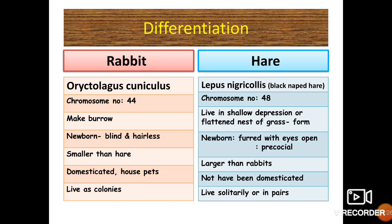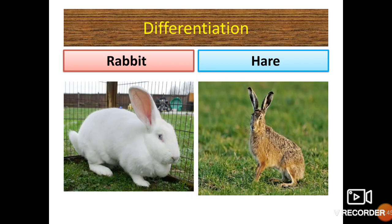Newborn rabbits are blind and hairless, while newborn hares are furred with eyes open and they are precocial — that is, they are able to feed themselves soon after birth. Rabbits are smaller than hares and are domesticated and kept as house pets; hares have not been domesticated. Rabbits live in colonies and hares live either solitary or in pairs.